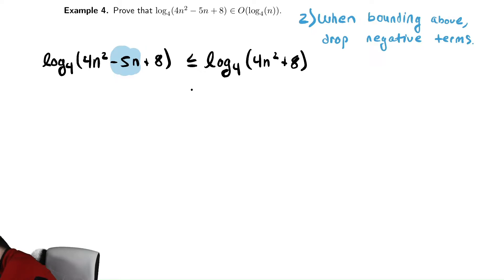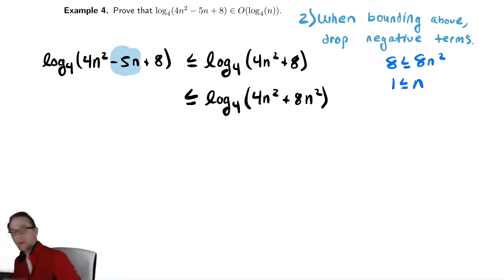Now, we'll apply our first rule that we learned, which is that we replace that lower order term, 8, with an equivalent higher order term, 8n squared. And just like before, we're going to comment off to the side that 8 less than or equal to 8n squared, so long as 1 less than or equal to n. We then collect together our like terms just like we did in the previous problem. We are now in the exact same territory we were before. So, this is less than or equal to log base 4 of 12n squared.